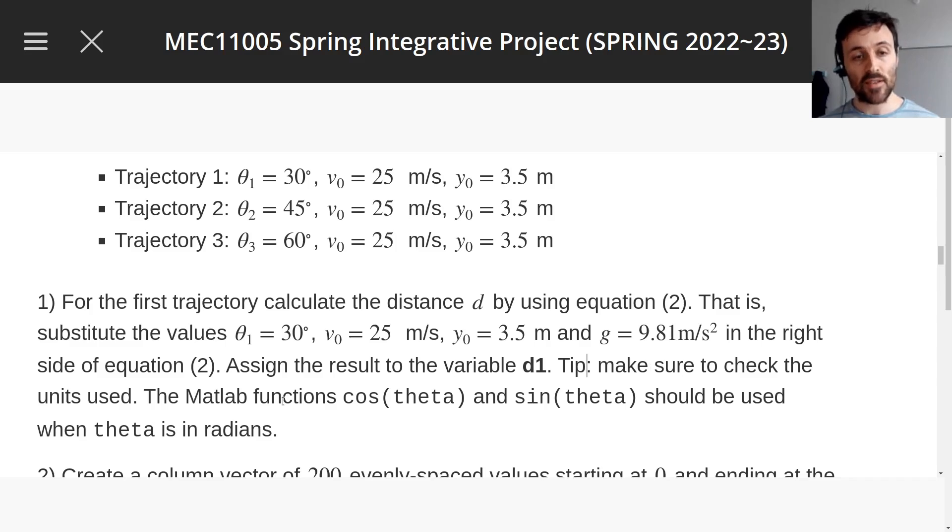We need to substitute these values into the right-hand side of equation two. That's equation two, so we need to substitute it from the right-hand side in MATLAB. We're going to assign the result to the variable d1. Note, I'm always going to make it bold, the variable that you have to give a numerical answer for. That's how you're going to be evaluated on the assignments and on the coursework. Always the bold one. And then a tip, make sure to use the right units. MATLAB has a function that you can call to calculate cosine and sine, but these ones for MATLAB expect that theta is in radians.